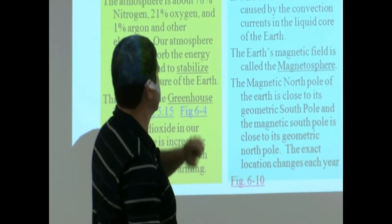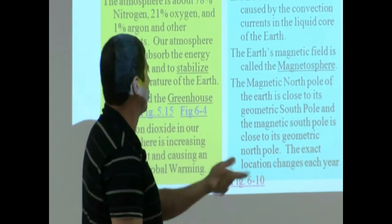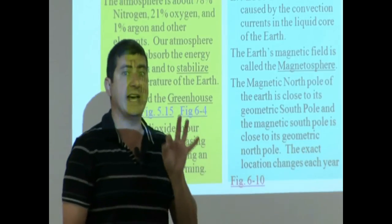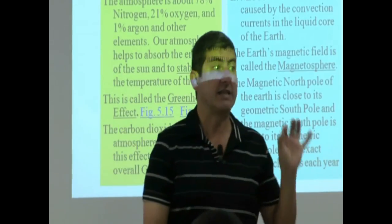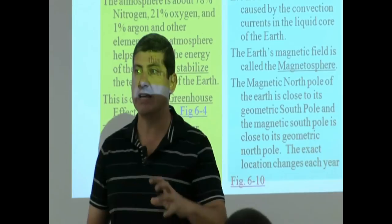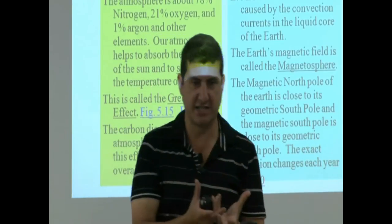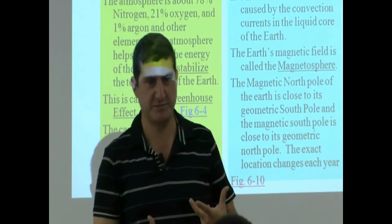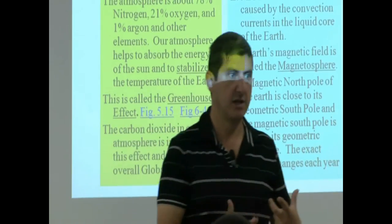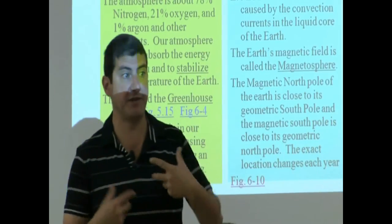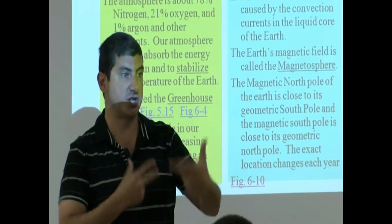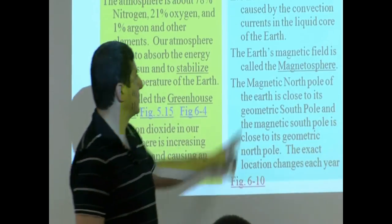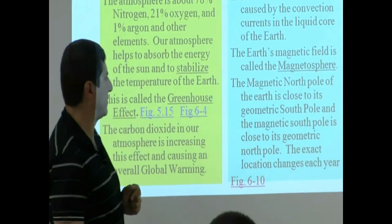Magnetic field is caused by the convection currents in the liquid core of the Earth. If a planet has no magnetic field, that is an indication that the interior of the planet is kind of dead — it doesn't have any action going on. So it's a good thing that we have a magnetic field; it means there's convection currents. Our planet is not dead. The Earth's magnetic field is called the magnetosphere.